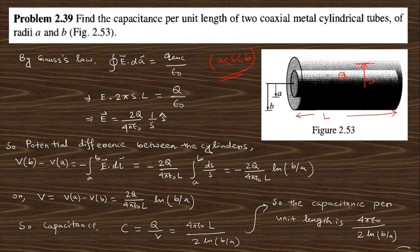The potential difference V = ∫E·dl from a to b gives an integral of ds/s, which evaluates to ln(b/a). Since b > a, this term is positive. Taking the magnitude, V = Q·ln(b/a)/(2πε₀l). The capacitance C = Q/V gives C = 2πε₀l/ln(b/a). The capacitance per unit length (l = 1) is therefore C/l = 2πε₀/ln(b/a).